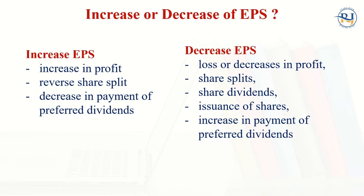Earning Per Share can increase or decrease. If profit is increasing, EPS will increase; if profit is decreasing, EPS will decrease. EPS can also increase when there is a reverse share split. A share split means, for example, two-for-one — a shareholder with one share gets two shares. A split divides one share denomination into multiple denominations; for example, one share becomes five shares in a five-for-one split.